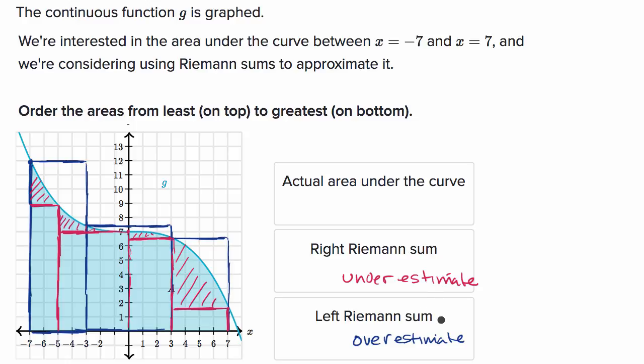So if we want to rank these from least to greatest, well, the right Riemann sum is the least. It is underestimating it. Then you have the actual area of the curve, which is just the area of the curve, and then you have the left Riemann sum, which is the overestimate.